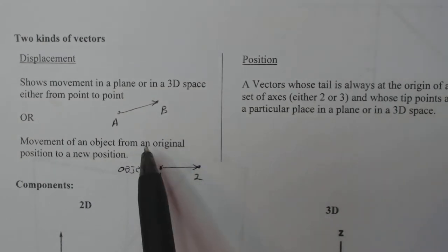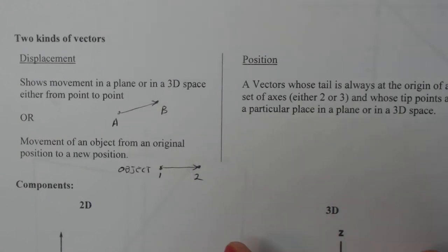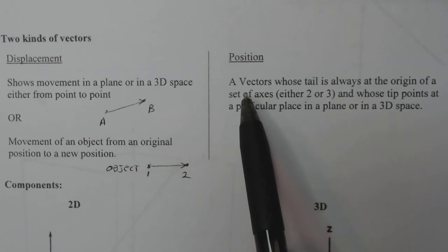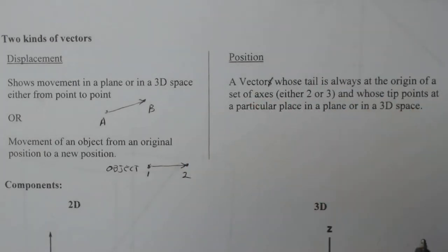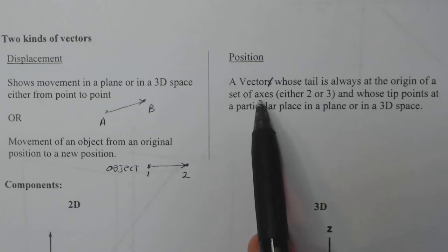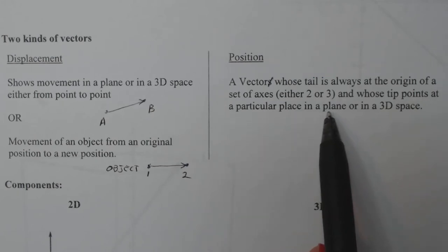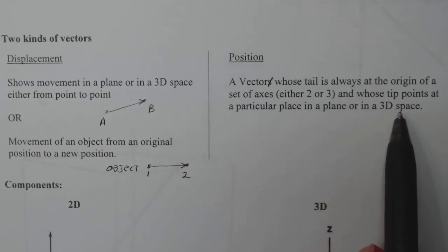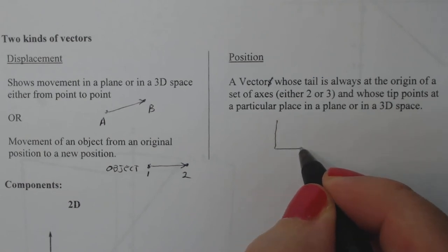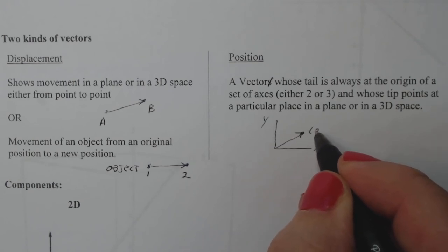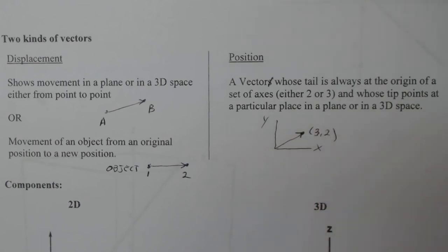So this shows movement of a single object. This is a movement from point A to point B. Now position vector is a vector whose tail is always at the origin of a set of axes, either two axes or three axes. It doesn't matter. And whose tip points at a particular place in a plane or in a 3D space. So if I'm sitting here in my X, Y axis, and I have a vector that comes out here and points to the ordered pair three comma two, that's considered a position vector. The vector is pointing at a position in the plane. It could be either a 2D plane or a 3D plane.